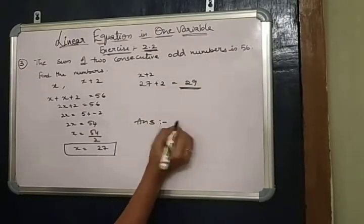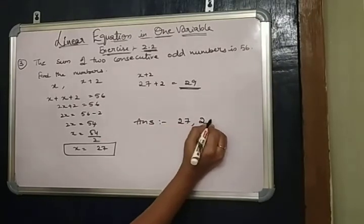Okay, your answers are: the two numbers are 27 and 29.